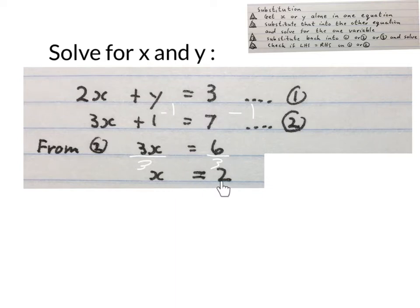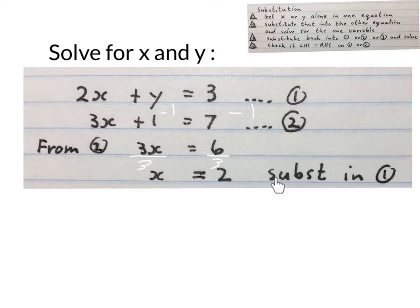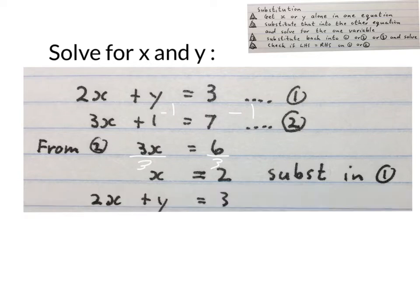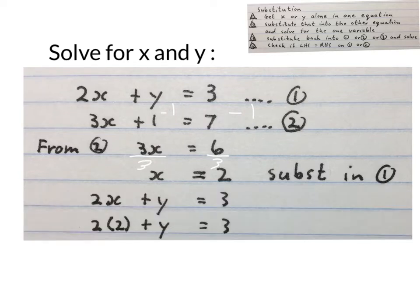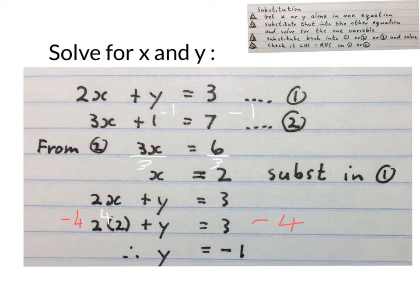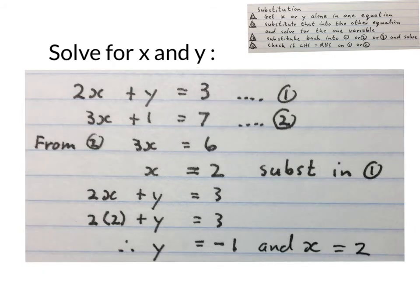We now substitute X equals two into the other equation. We rewrite the first equation, replace the X with two, and simplify for Y. Two times two is four; minus four on both sides gives Y equals minus one. So the final answer is Y equals minus one and X equals two.